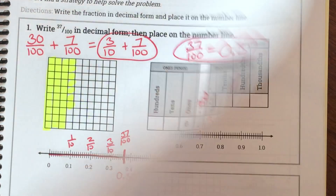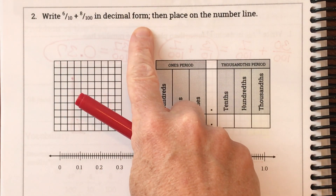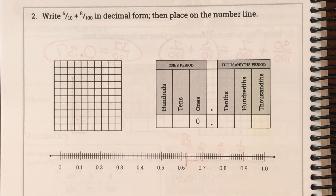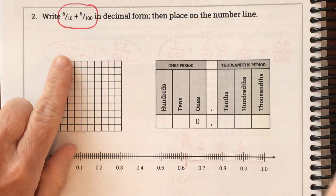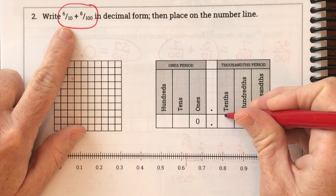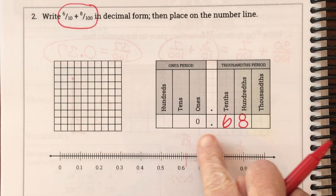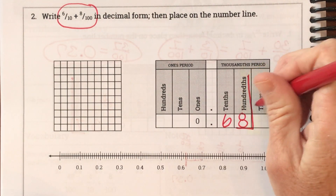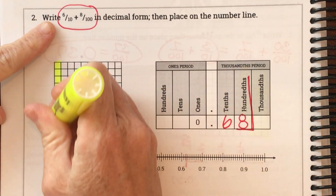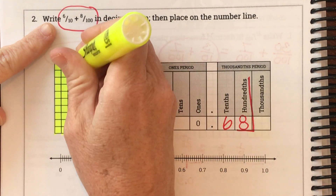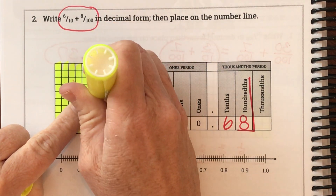Here's my next problem: write six tenths plus eight hundredths in decimal form, then place it on the number line. Step one says decompose the fraction into tenths and hundredths, but they already did it for me. So I can put it right on the place value chart: six tenths goes in the tenths place, eight hundredths goes in the hundredths place — that gives us 0.68. On the grid, six tenths looks like one tenth, two tenths, three tenths, four tenths, five tenths, six tenths, and eight hundredths: one, two, three, four, five, six, seven, eight.